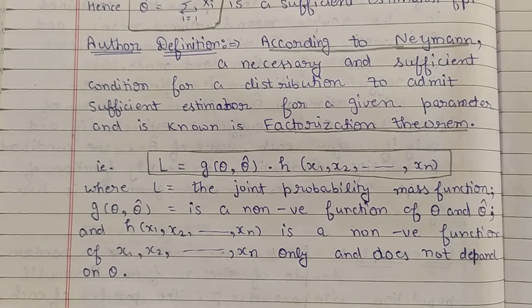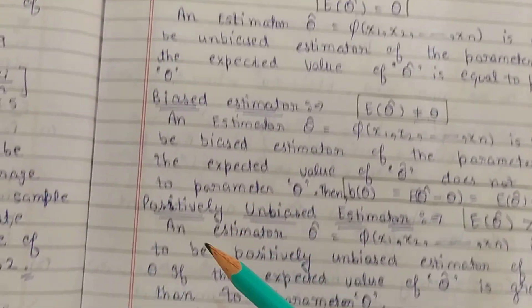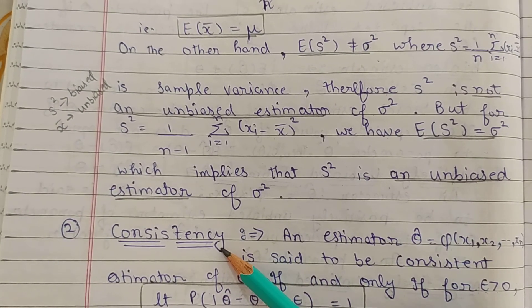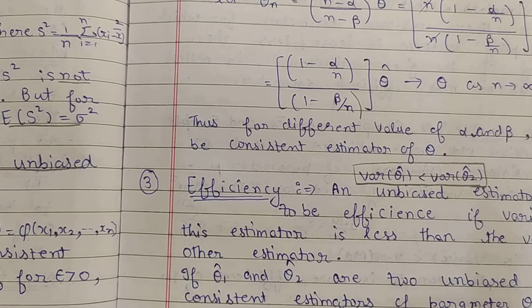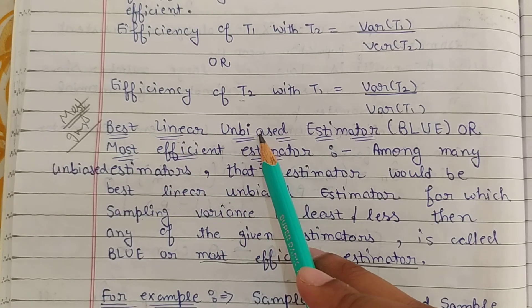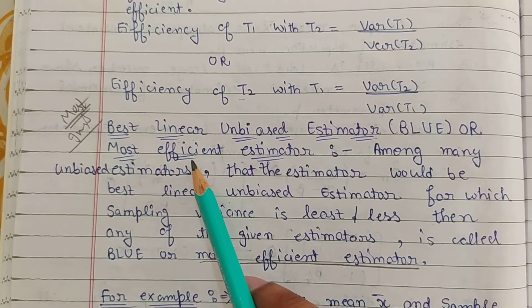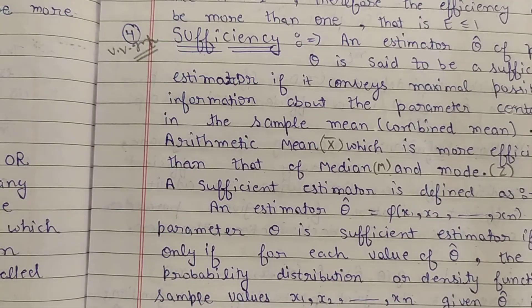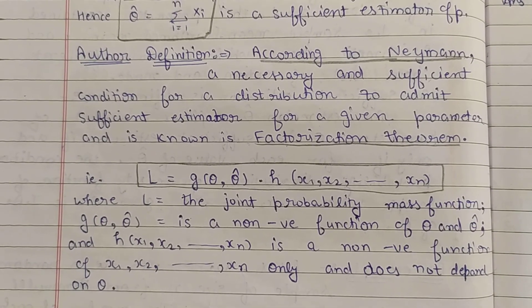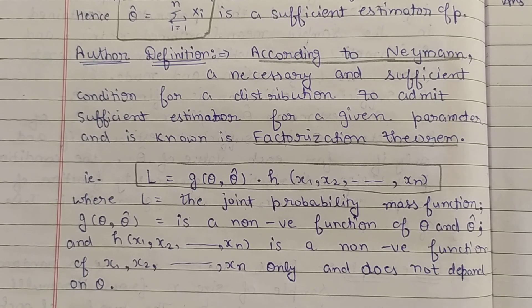So with this, our 4 definitions are complete: First was Unbiased Estimator (including biased, positive, negative). Second was Consistent Estimator. Third was Efficient Estimator (including BLUE — Best Linear Unbiased Estimator or Most Efficient Estimator). Fourth and last was Sufficient Estimator. If you have any doubt in any definition, you can ask me in the comments. Thank you.